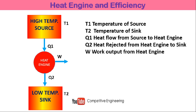From energy balance, the total energy supplied minus the total energy rejected equals the work output. Total energy supplied is Q1 and total energy rejected is Q2, so Q1 minus Q2 equals work output W.